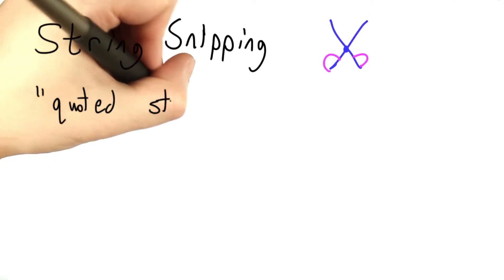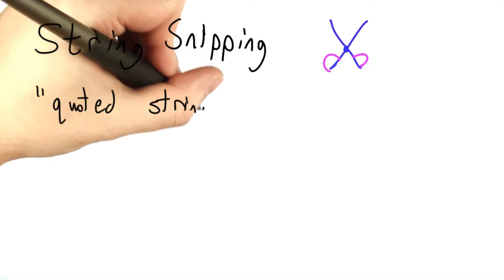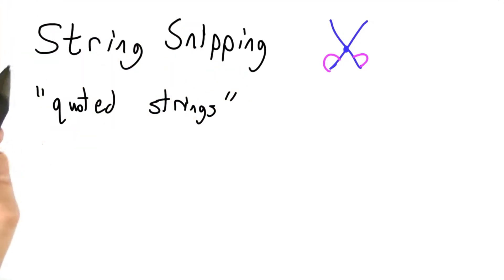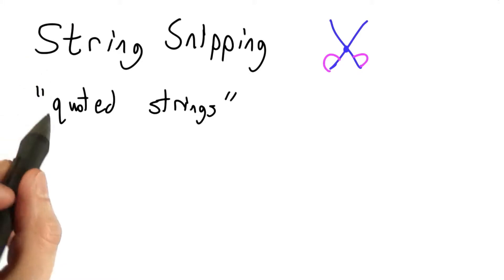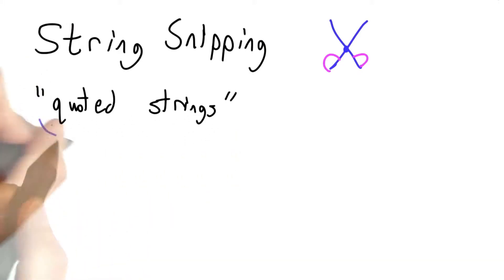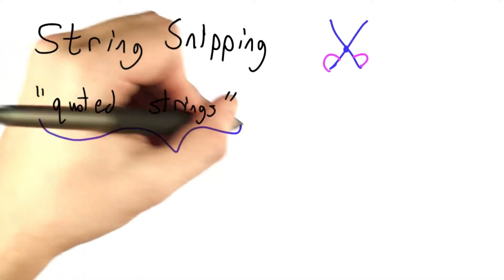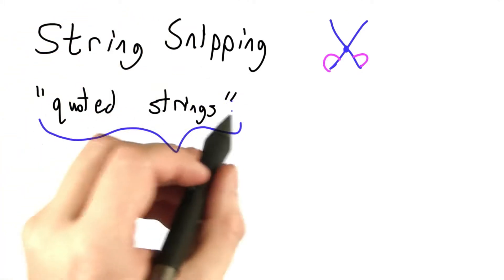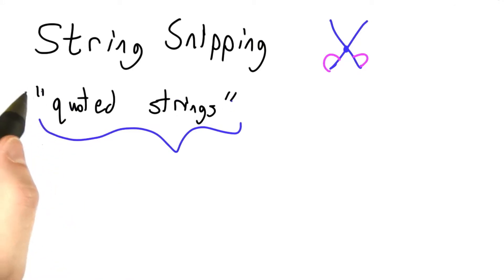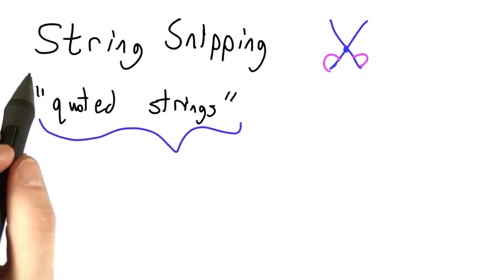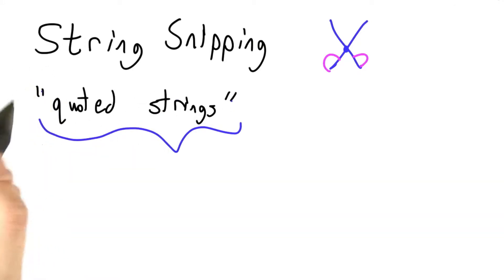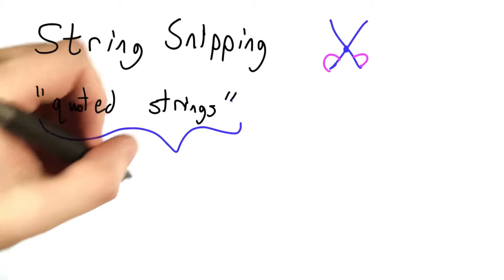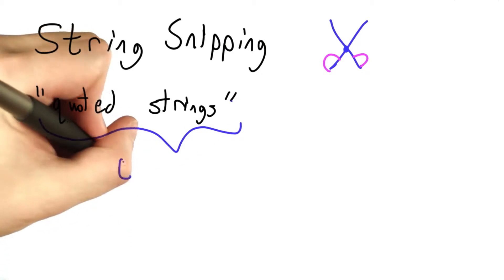So you may have noticed a bit of redundancy in our handling of quoted strings. We return the entire matched text, which includes these double quotes at the end. But in some sense, they're not as much part of the meaning as they are beginning and ending markers to tell us when the string starts.